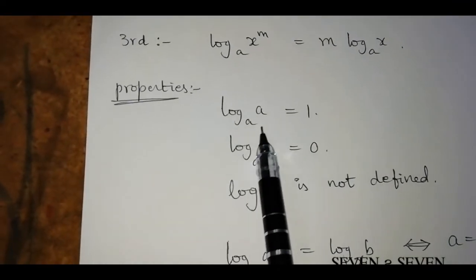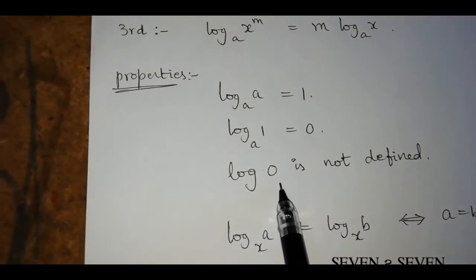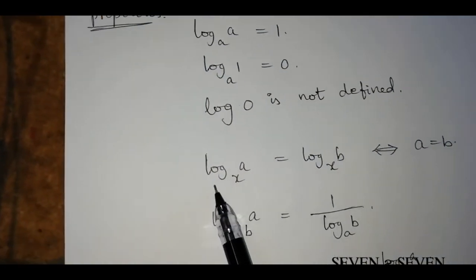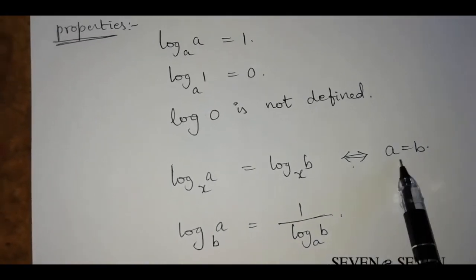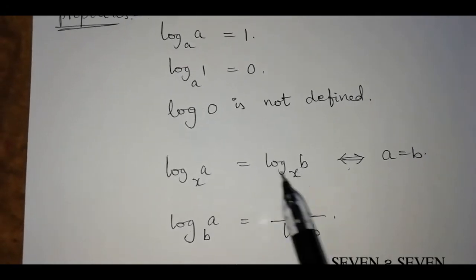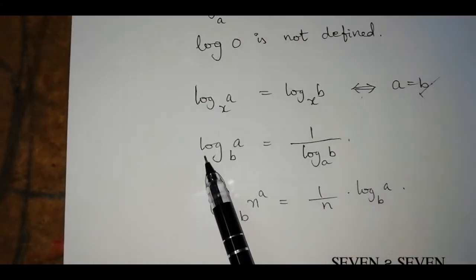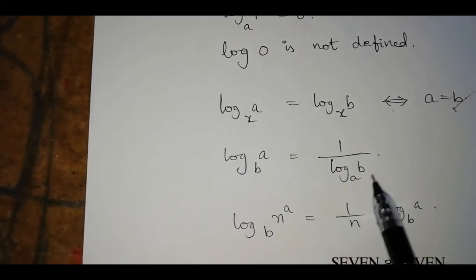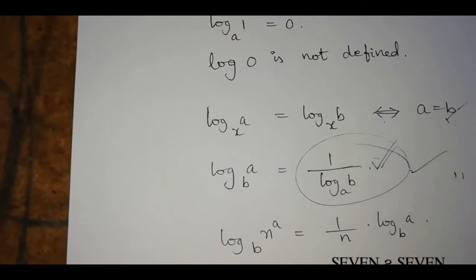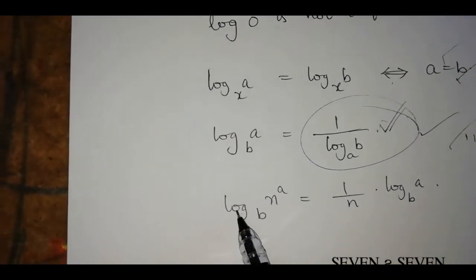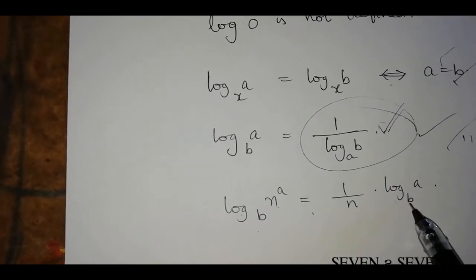Properties: log a to base a equals 1. Log 1 to base a equals 0. That is why log 0 is not defined. Log a to base x equals log b to base x if a equals b. Log a to base b equals 1 by log b to base a. Log n^a to base b equals 1 by n times log a to base b.